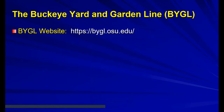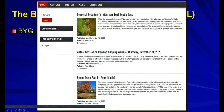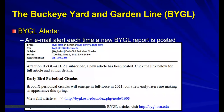You can get BYGL a number of ways - visit bygl.osu.edu or just Google 'BYGL' and it'll take you right to it. But a much better way to tap into this constant source of information is to get BYGL alerts. When we post an alert - which can be 24/7, even over weekends - you'll get an email with just the title of the report and a brief description. You won't get flooded - just a clickable hot link to the full alert.